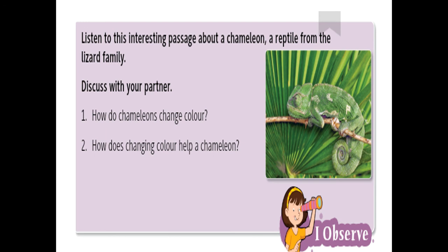Chameleons can change their skin color because they have different colored pigments under their thin skin. This process of changing color is called camouflage. Camouflaging helps the chameleon to find their prey easily without being noticed. It also protects the animals from being noticed by predators. Did you know that the smallest reptile is thought to be the mini chameleon from Madagascar, which only grows to just over an inch in length?